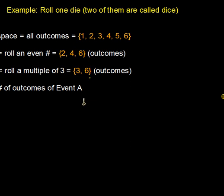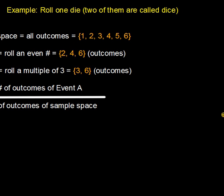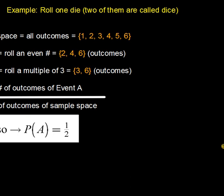The next thing to consider is: what's the probability of event A occurring? We write it as P(A), which equals the number of outcomes of event A divided by the number of outcomes of the sample space. Event A has three outcomes — two, four, and six — and the sample space has six outcomes, so P(A) = 3/6, which reduces to one-half.